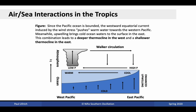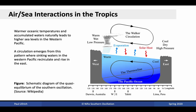Warm waters are pushed from the eastern Pacific towards the west, consequently producing a shallower thermocline in the east. Because of the shallower thermocline, it's naturally easier for upwelling to bring colder, deep waters to the surface in this region. The combination leads to a deeper thermocline in the west and a shallower thermocline in the east. What we generally see is warmer ocean temperatures and accumulated waters leading to higher sea levels in the western Pacific, in part because of the greater column height induced by warmer oceanic waters — recall that warmer waters have lower density and higher surface height due to thermal expansion.